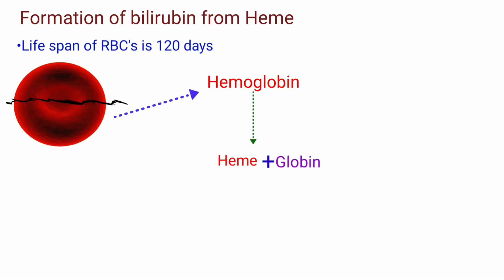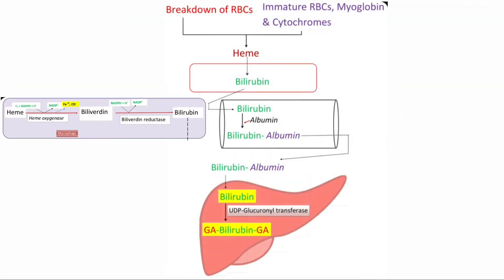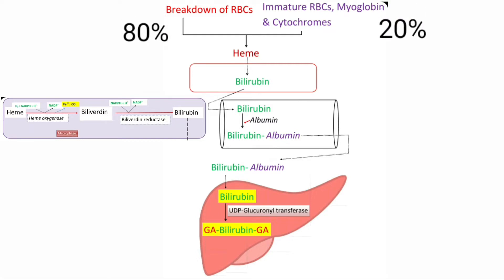After approximately 120 days in the circulation, the red blood cells are taken up and degraded by the reticuloendothelial system, particularly in the liver and spleen. Out of 100% heme which is degraded to bilirubin, 80% of heme comes from erythrocytes and 20% from immature erythrocytes, myoglobin, and cytochromes.